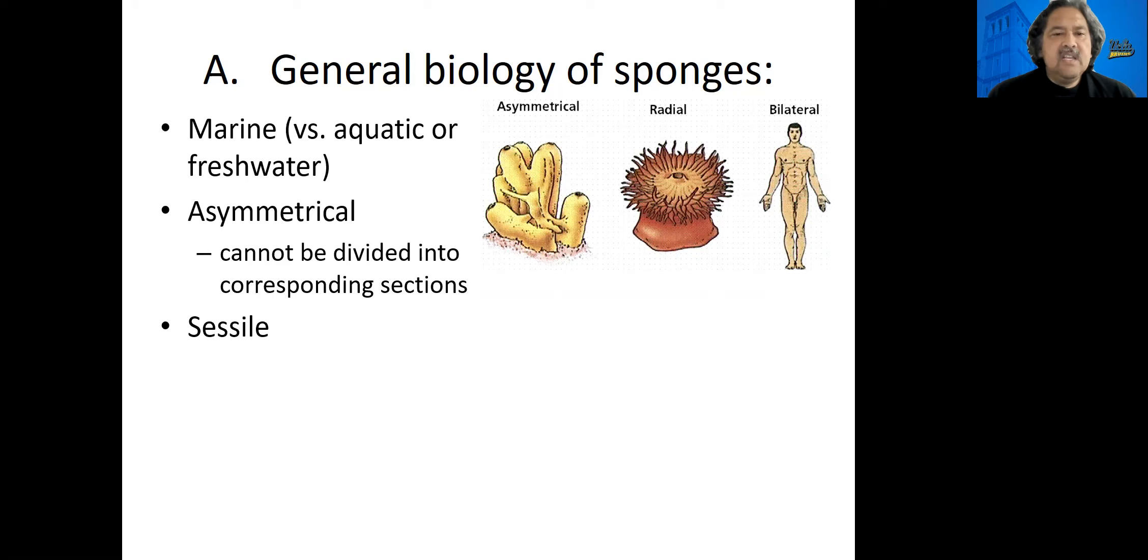Sponges are sessile. Sessile means that they are stuck in one place. Because they're sessile, they have to have a specialized means of feeding. These guys are filter feeders, and some sponges can take about six liters of water and pass it through their bodies in a minute. Because they are attached to an object, they need to be able to process a lot of water and filter out the organic substances that they can eat.